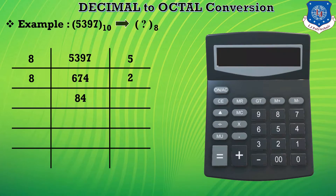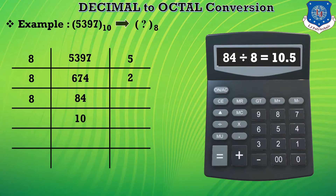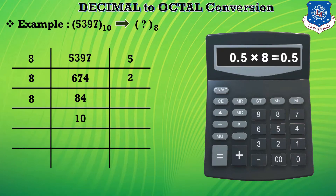In the next step, 84 is divided by 8 and we get the answer 10.25. Here 10 becomes the quotient and the remaining term is 0.5. Multiplying 0.5 by 8 we get the answer 4. So 4 becomes the remainder and we place this 4 at the remainder position.